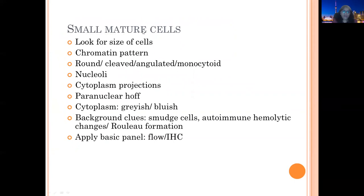For small mature B cells, we look at the size, chromatin pattern, and shape of the cells — whether they are round, cleaved, angulated, or monocytoid. We look for nucleoli, cytoplasmic projections, paranuclear hof, the amount and color of the cytoplasm — grayish or bluish. We also look for background clues. For example, in CLL we are looking for smudge cells and autoimmune hemolytic picture. For plasma cell neoplasm, we look at the Dutcher body formation. Based on this, we apply our basic immunohistochemistry.